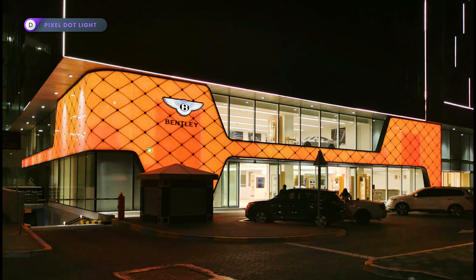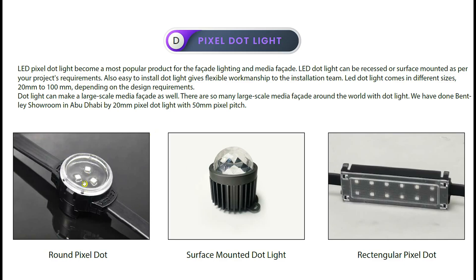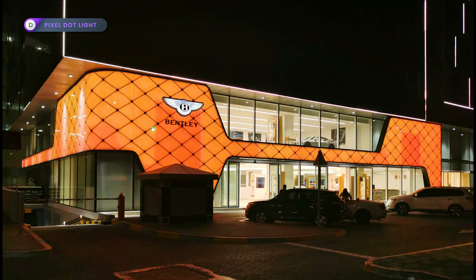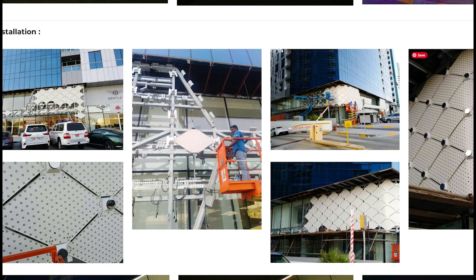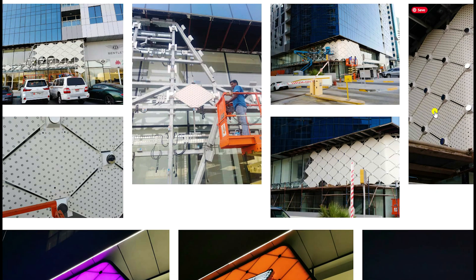This is one of the projects we completed in Abu Dhabi, UAE. We used a small single-LED pixel dot light installed behind frosted white glass. This is the actual panel — each aluminium panel uses around 160 dot lights, and each panel is installed individually on the main structure.